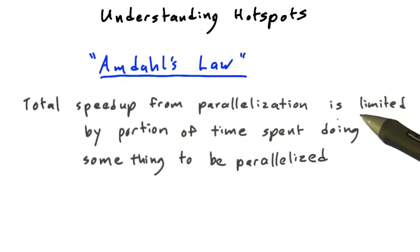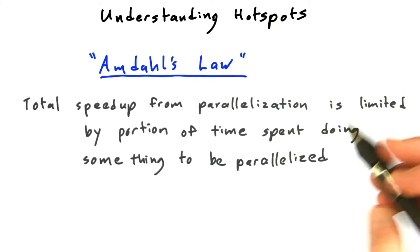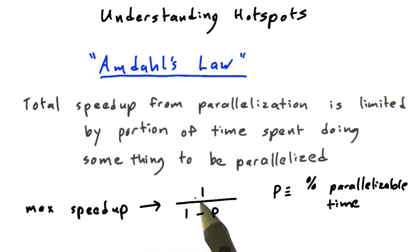The total speedup you get is limited by the portion of the time you spend doing something that can be parallelized. In the limit of enough parallelism, doing a good enough job with parallelism, having a parallel enough machine, your maximum speedup approaches 1/(1-p), where p is defined as the percentage or portion of parallelizable time spent on this parallelizable activity.